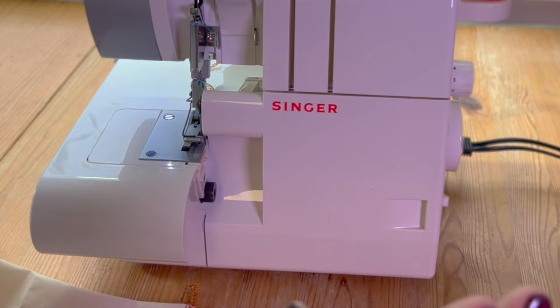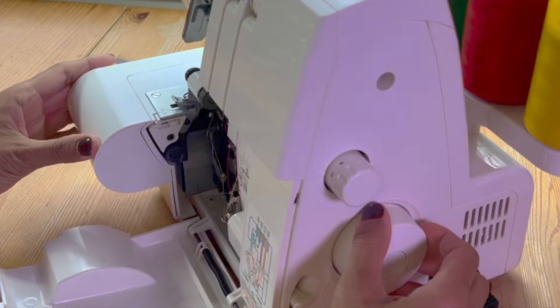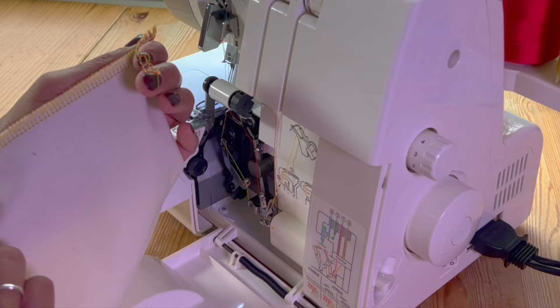Let me show you what can happen if I don't thread up the machine properly. And this is a common problem. What I'm going to do is this yellow thread. So that's, let me show you again, that's the lower looper. So that's the underside.